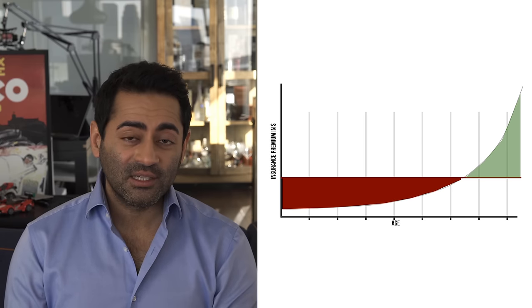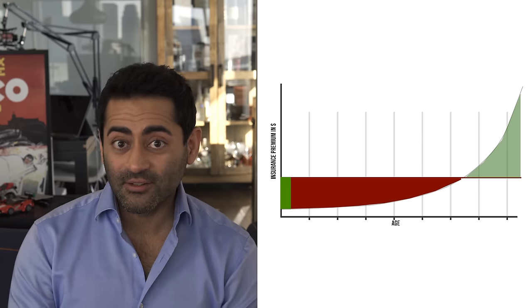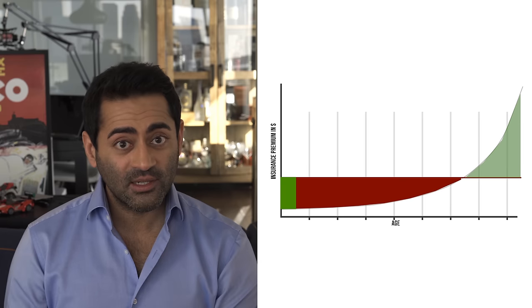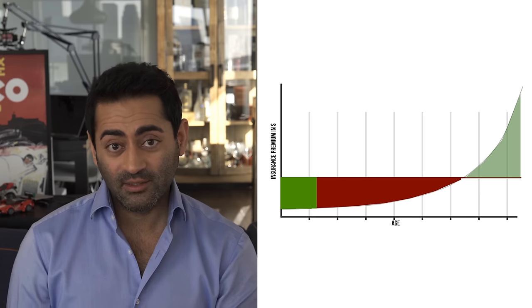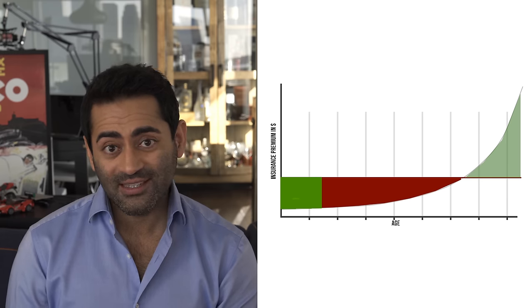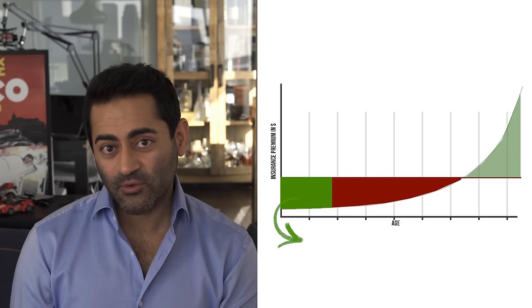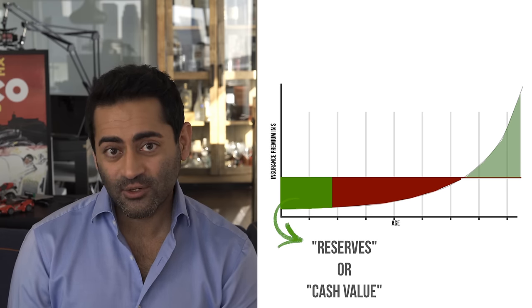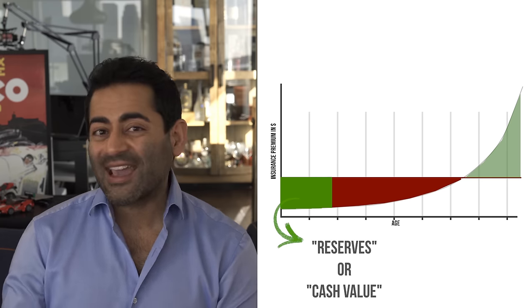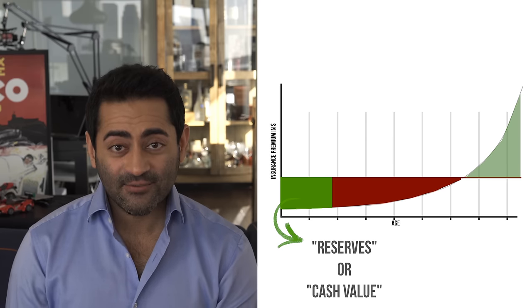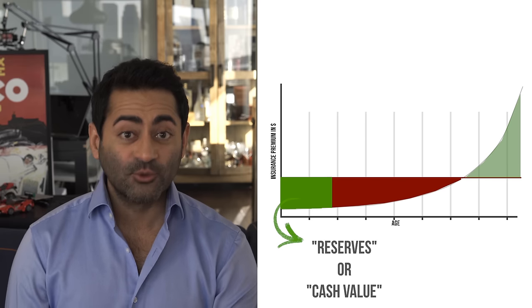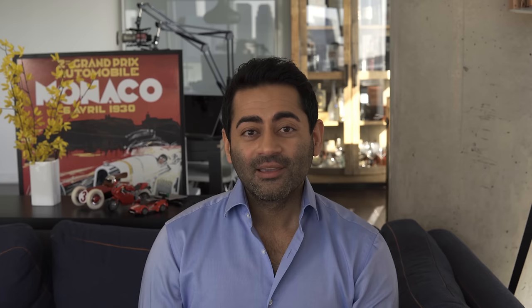Essentially, the insurance company invests the difference. The difference between the premiums you pay and the cost to provide the pure insurance is set aside into what is referred to as either reserves or cash value. This excess is invested and grows over time. Let's switch to another graph to show this more specifically.